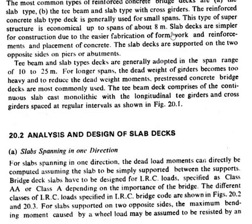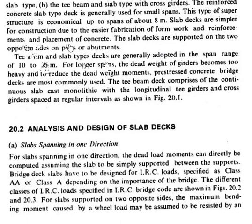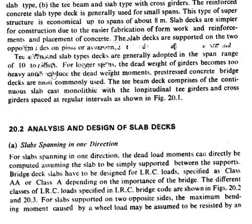Slab decks are simpler for construction due to easier fabrication of formwork, reinforcements, and placement of concrete. Slab decks are supported on two opposite sides on piers or abutments. T-beam and slab type decks are generally adopted for spans ranging from 10 to 25 meters. For longer spans, the dead weight becomes too heavy, so pre-stressed concrete bridge decks are most commonly used.